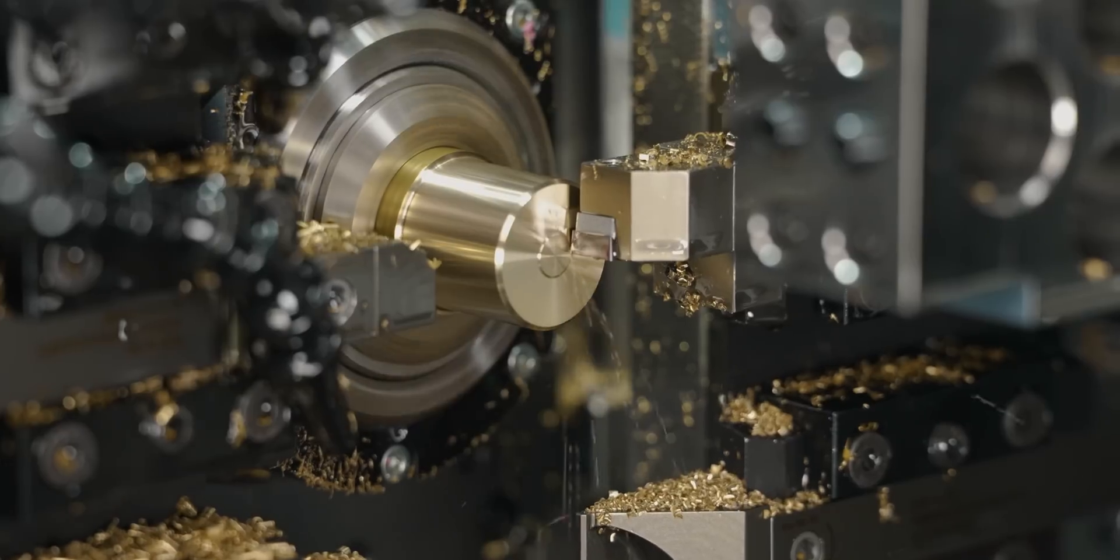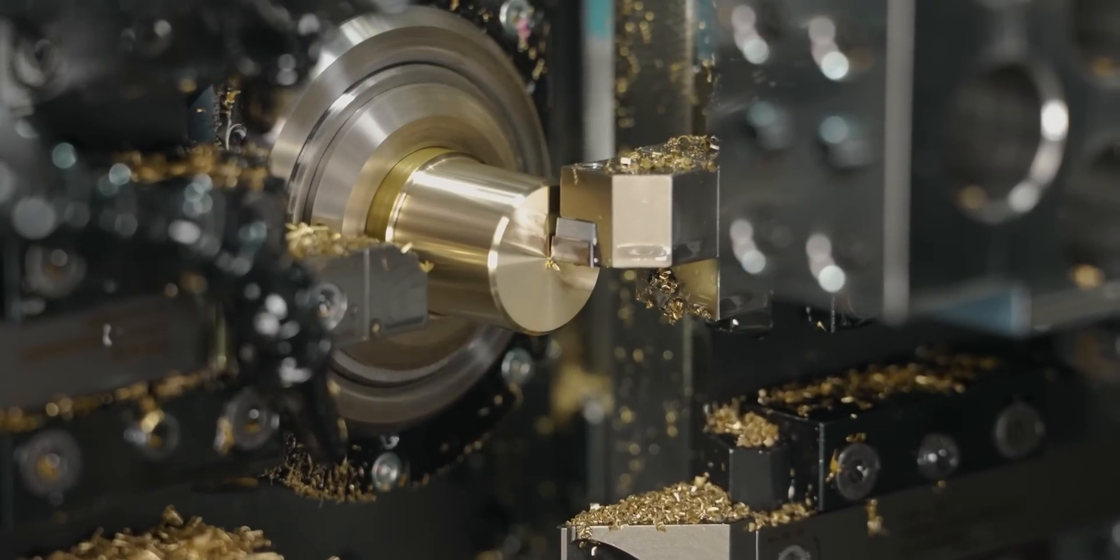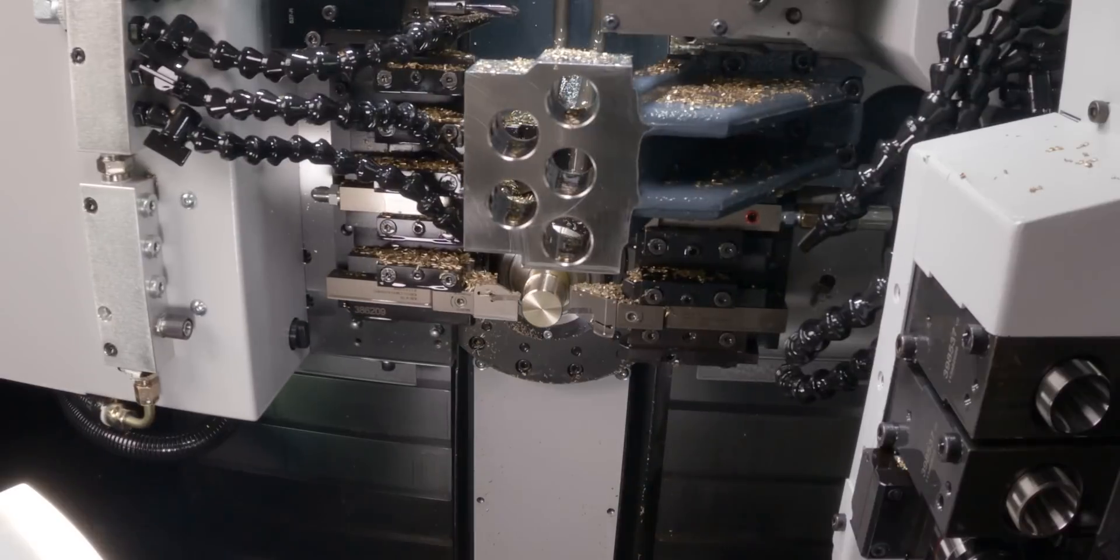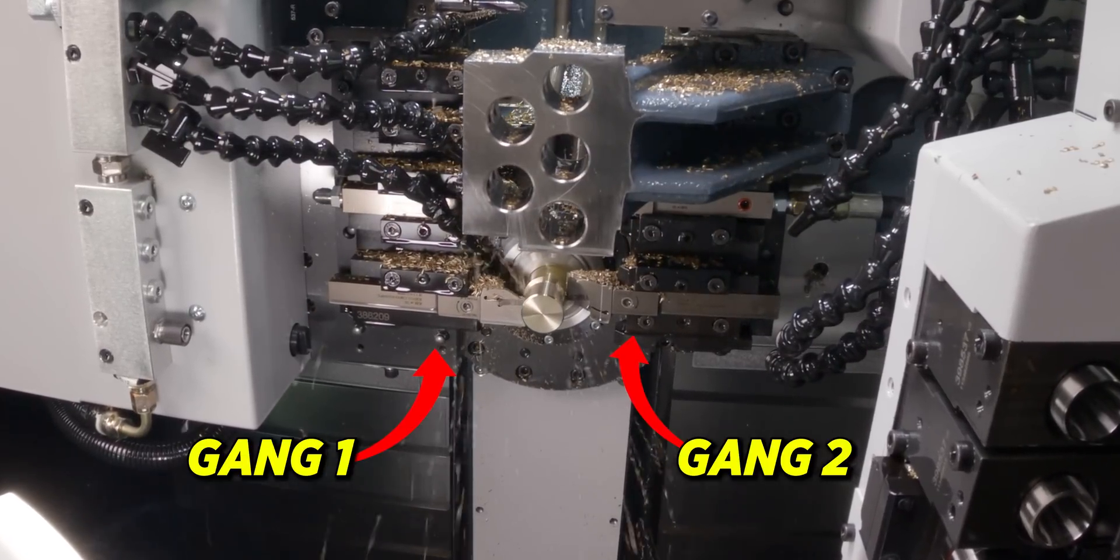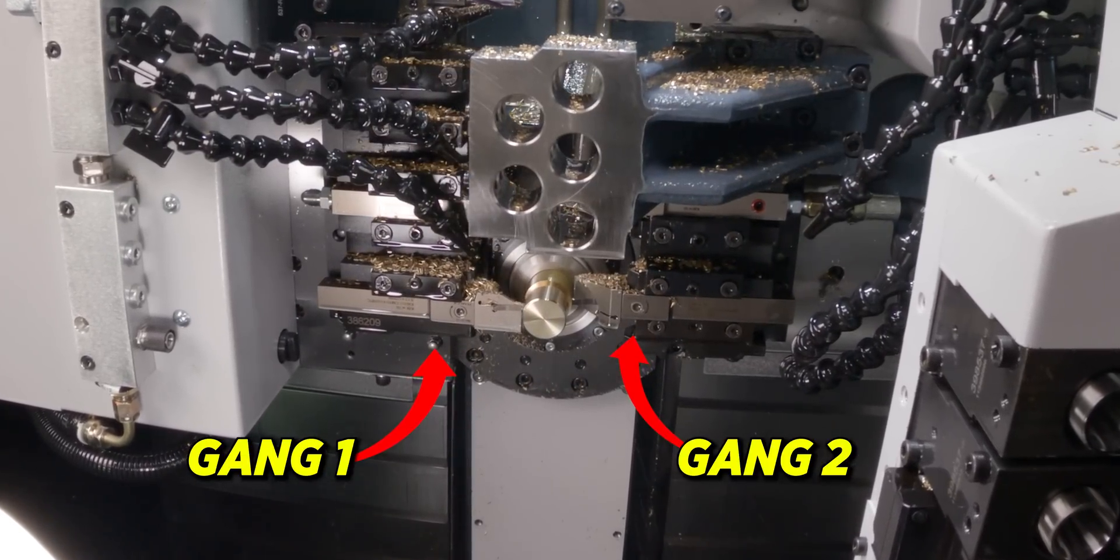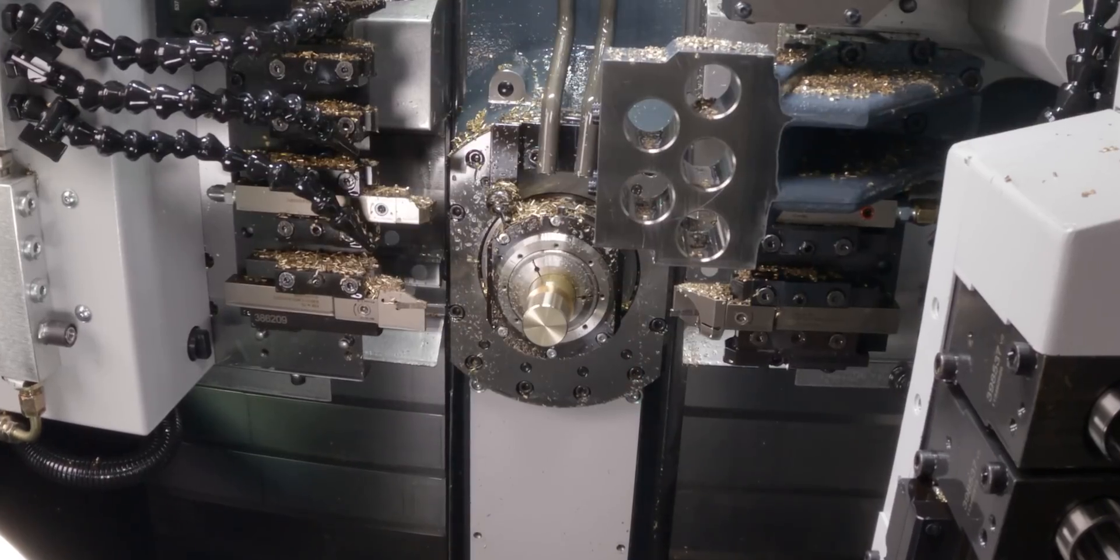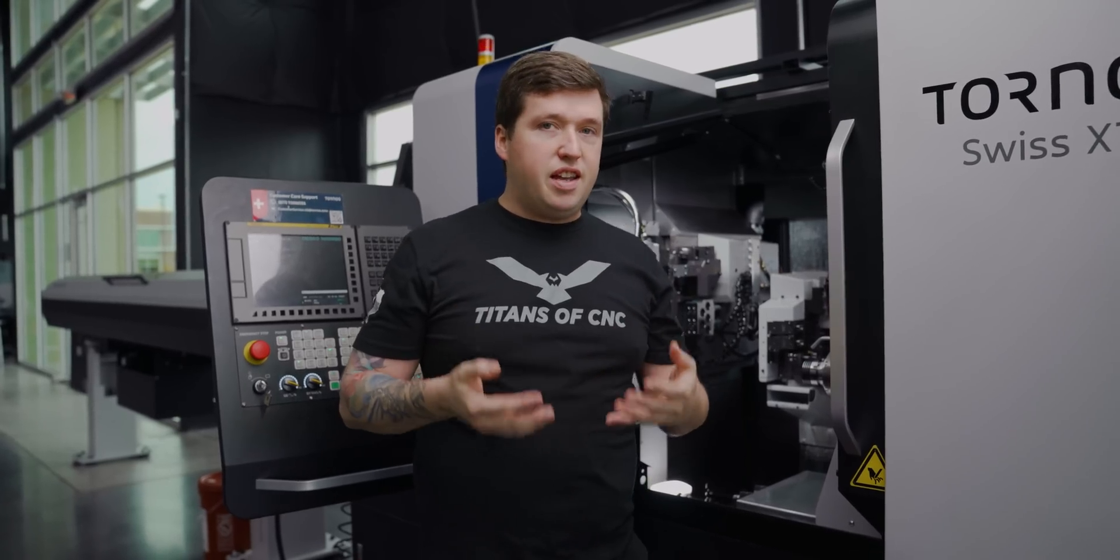This Swiss machine is a little bit different than the other machines you've seen here at Titans of CNC. This machine has two gangs that work together on the main spindle at the same time. And the issue with that is that the tools are all in line with each other, so it's very easy to have collisions.